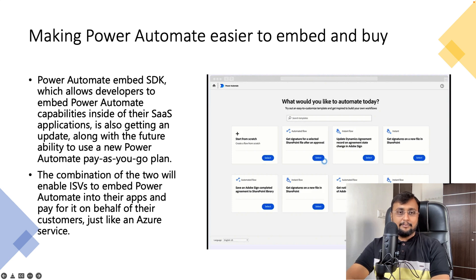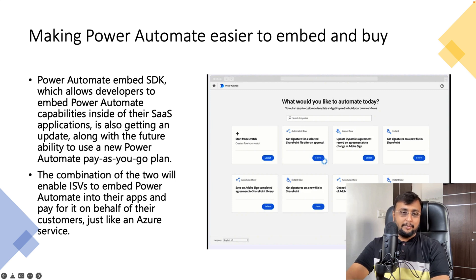The fourth important feature is around Power Automate Pay As You Go and Power Automate Embedded. If we want to use Power Automate capability inside a SaaS application, Microsoft has introduced an embedded SDK that developers can use to utilize Power Automate capability inside that SaaS application. They pay for the Power Automate services using the Pay As You Go plan. This combination enables independent software vendors to embed Power Automate into their applications and pay on behalf of their customers, just like an Azure service.